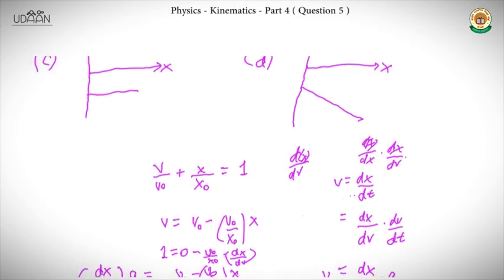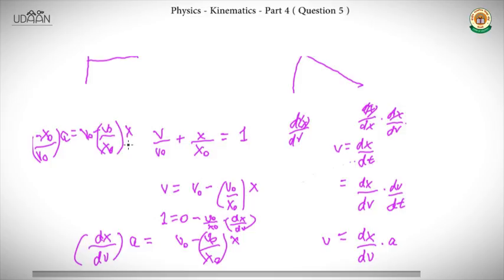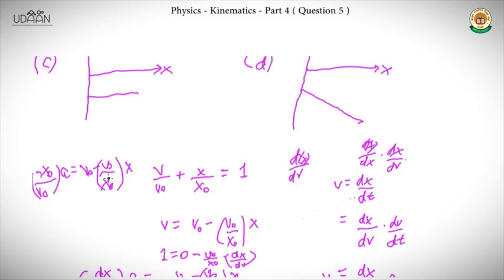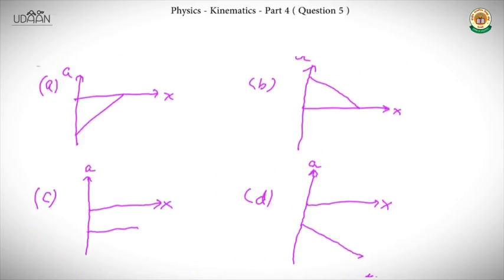With dx/dv = -x₀/v₀, we substitute back and get: (-x₀/v₀)·a = v₀ - (v₀/x₀)·x. Rearranging gives the acceleration as a function of displacement: a = -v₀²/x₀ + (v₀²/x₀²)·x. This is the equation relating acceleration to displacement.